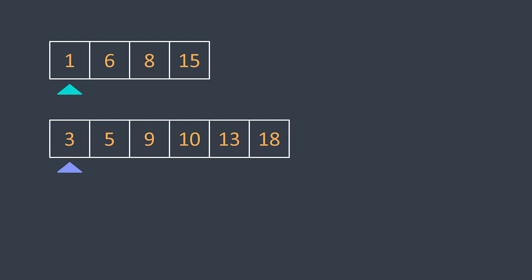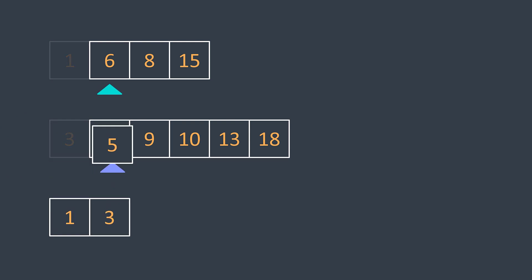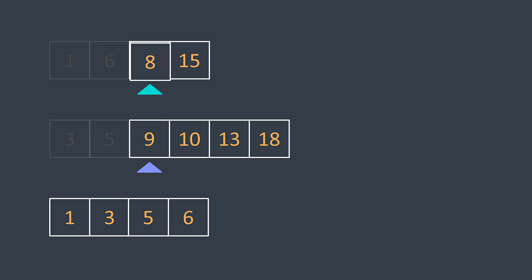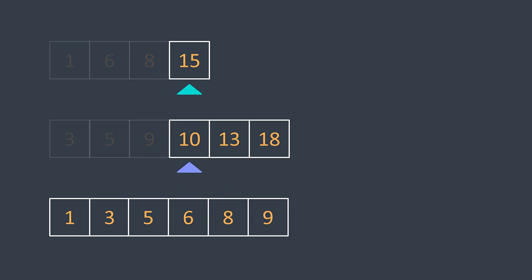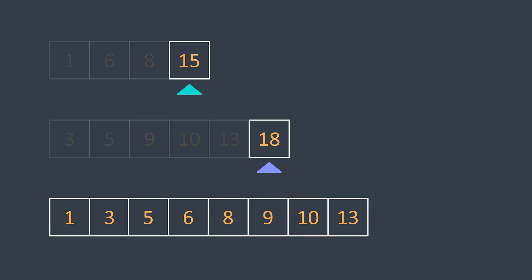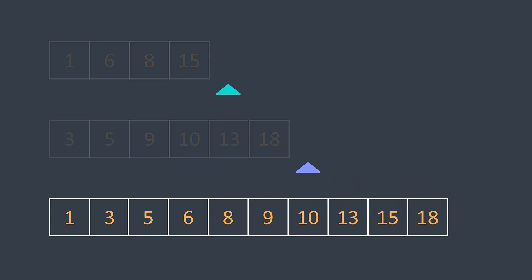One of the first algorithms you may have learned about is how to merge two sorted lists. We put a pointer at the beginning of each list and keep taking the smallest element, incrementing the pointer until we finish them both. This is what we call two-way merge.